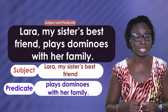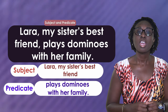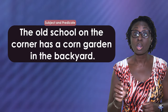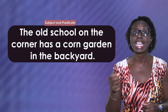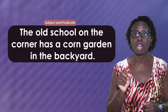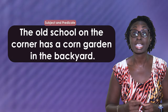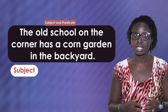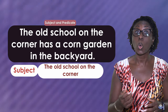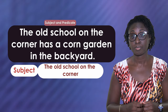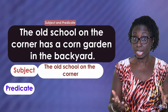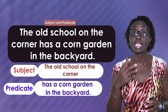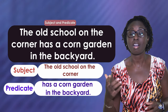'Laura, my sister's best friend, plays dominoes with her family.' Subject: Laura, my sister's best friend. Predicate: plays dominoes with her family. 'The old school on the corner has a corn garden in the backyard.' Subject: the old school on the corner. Predicate: has a corn garden in the backyard.